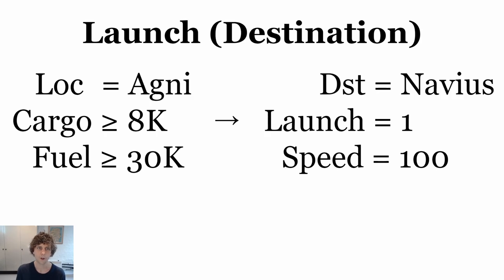Similarly on the destination, we need to verify that we are on Agni, that our cargo is full, and that we have enough fuel for the return trip. This fuel check is optional, particularly if you can't refuel at the destination, but I like it to just protect against accidentally stranding a spaceship. Like our launch home scenario, we need to set the destination to Navius, our launch signal to one, and our speed to 100.